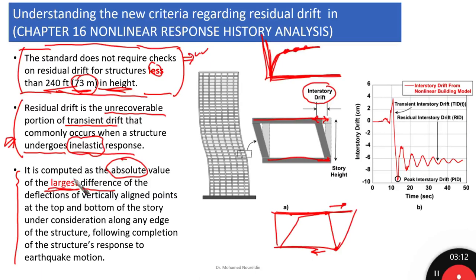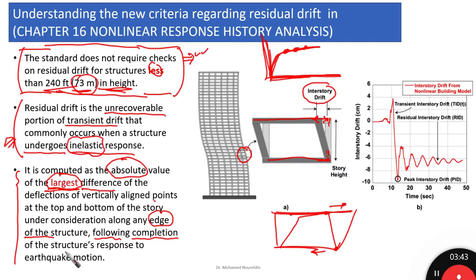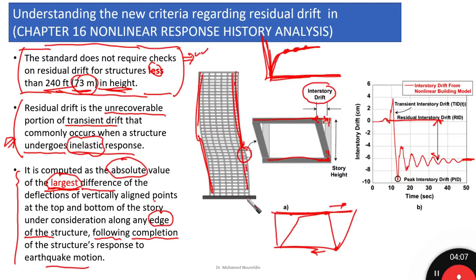We are talking about the largest difference of the deflections of vertically aligned points — as we said, vertically aligned points — at the top and bottom of the story under consideration, along any edge of the structure. Following completion of the structure's response to earthquake motion, the building is at rest and there is a permanent residual drift — the structure is inclined, as if it is leaning to one side. This indicates residual drift.